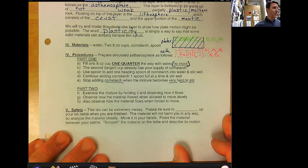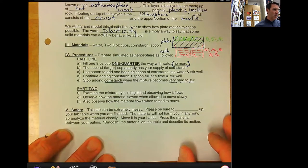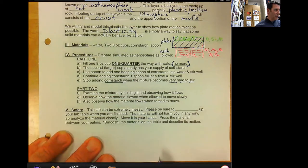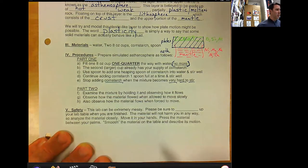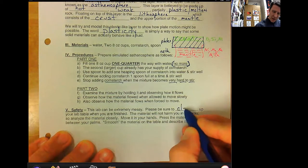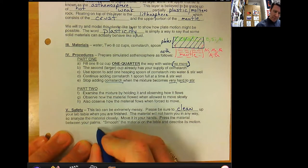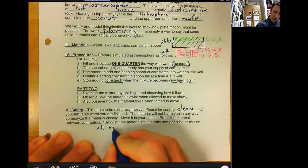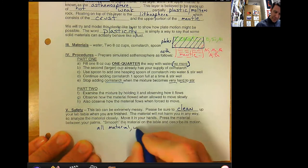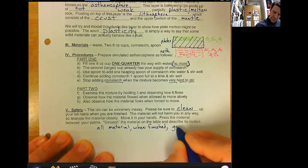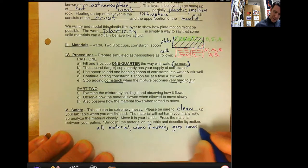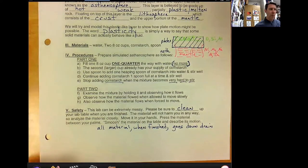Safety: This lab can be extremely messy but it's not dangerous at all. Please be sure to clean up your lab table when you are finished. The material will not harm you in any way, so analyze the material closely. Move it in your hands, press the material between your palms, smoosh the material on the table, and describe its motion. Please be sure and clean up. All material when done can go down the drain, goes down the sink. Just run the water and you'll be good to go.